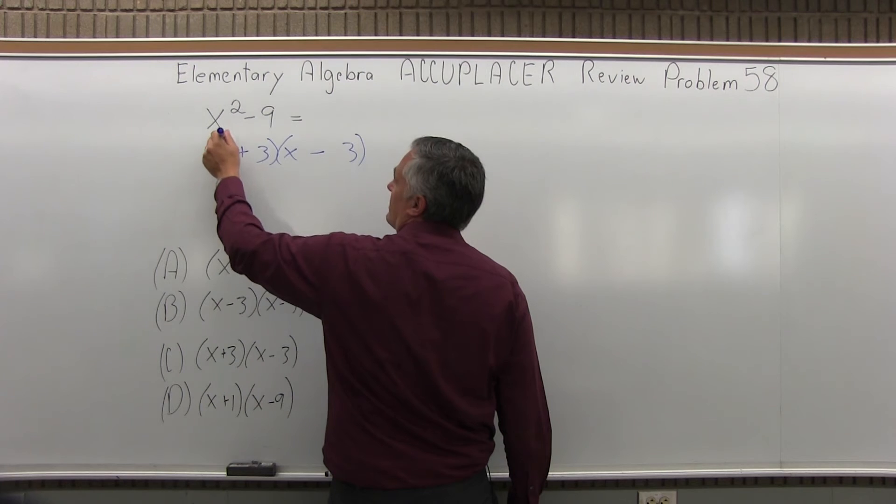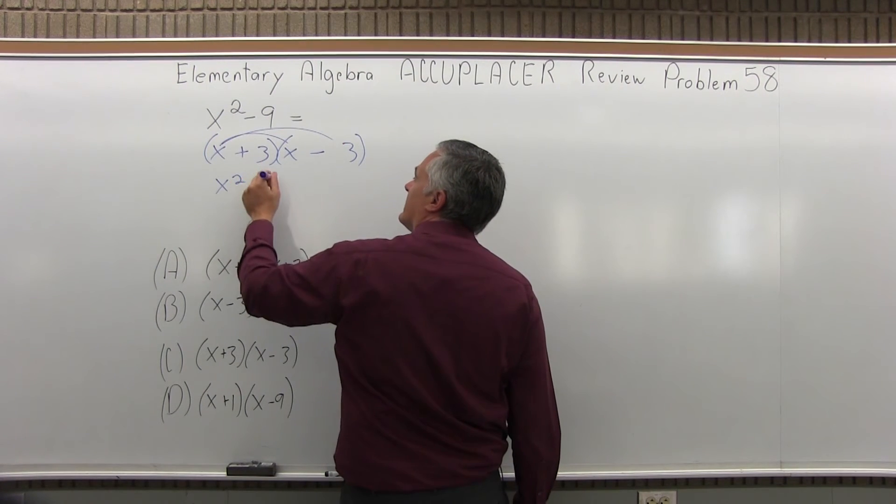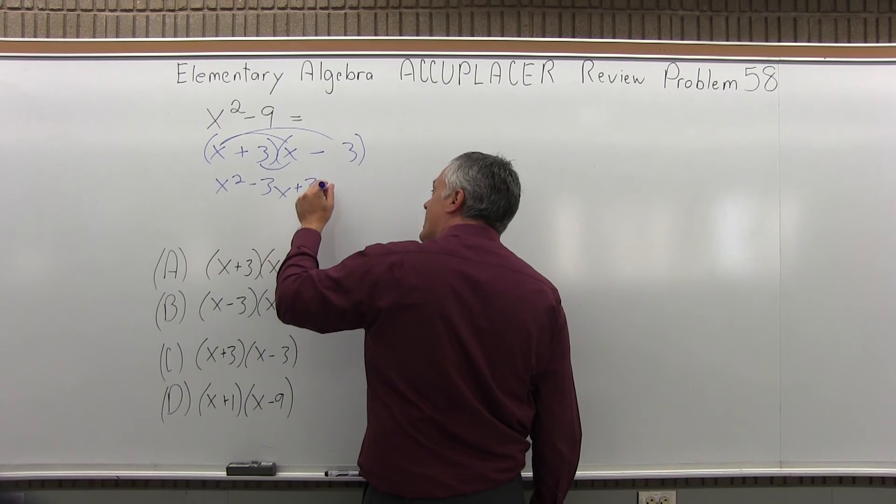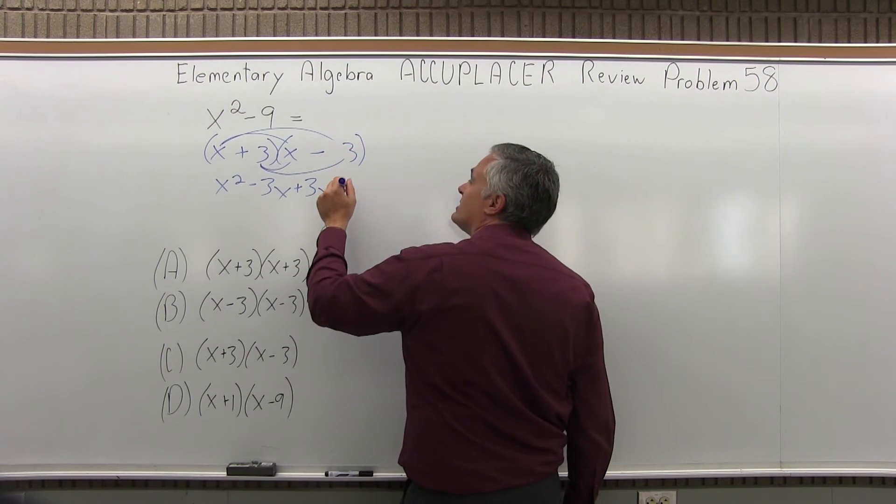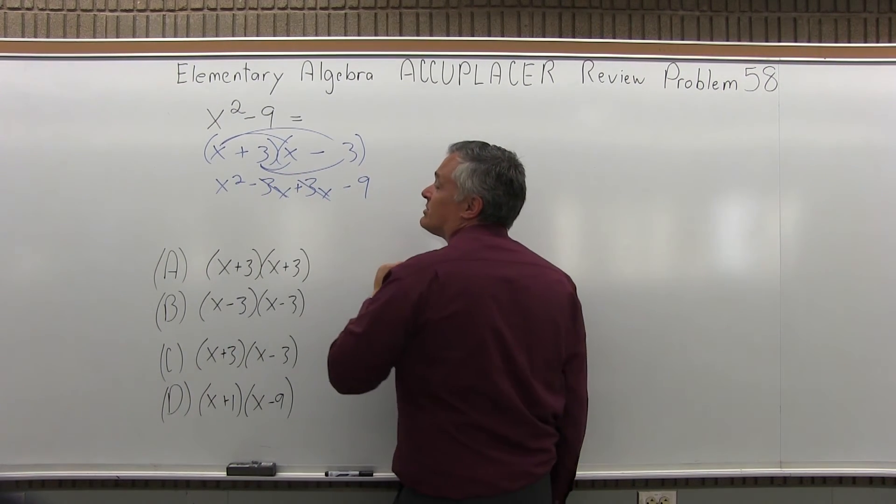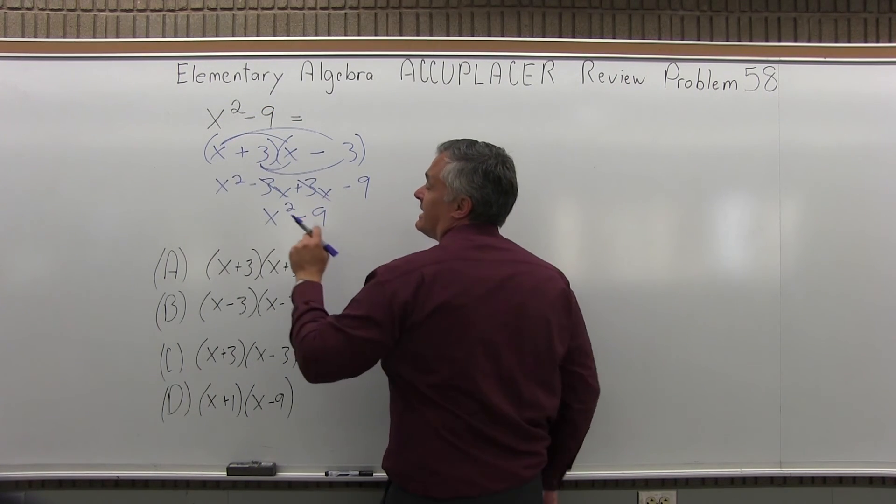So, let's verify that. x times x is x squared. x times negative 3 is negative 3x. 3 times x is plus 3x. 3 times minus 3 is minus 9. So, negative 3x plus 3x cancel, and I have what the original question was, x squared minus 9.